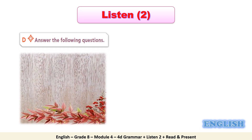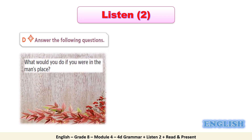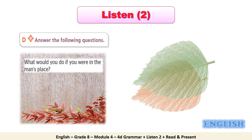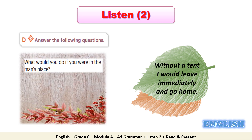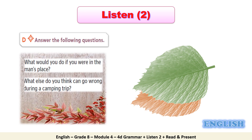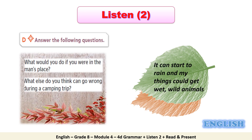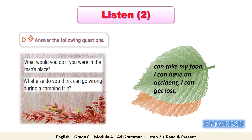Activity D: Answer the following questions. Number 1: What would you do if you were in the man's place? One suggested answer is: without a tent, I would leave immediately and go home. Question number 2: What else do you think can go wrong during a camping trip? One suggested answer is: it can start to rain and my things could get wet.